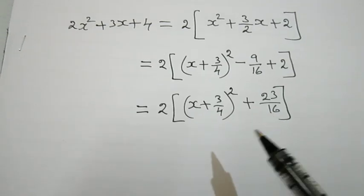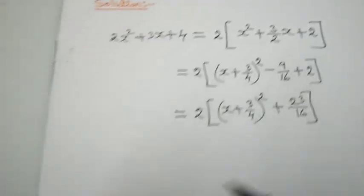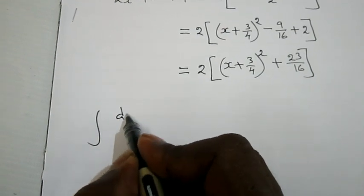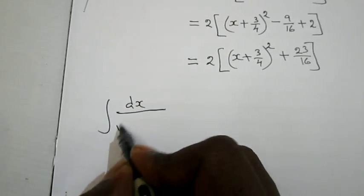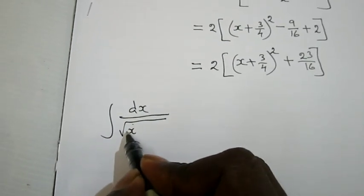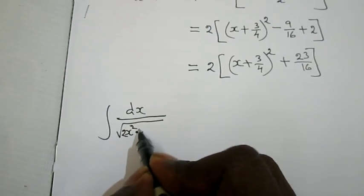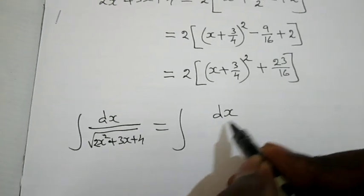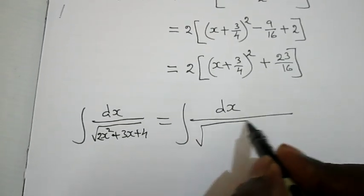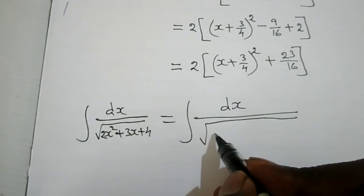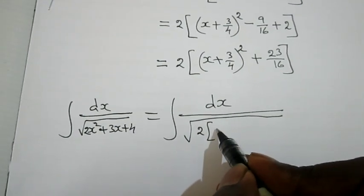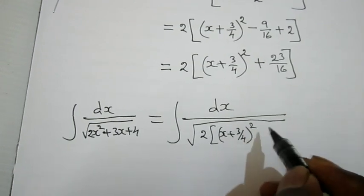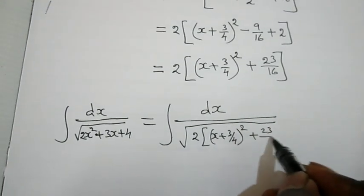Now I am going to substitute this into the given integral. The integral dx by root of 2x squared plus 3x plus 4 equals the integral dx by root of 2 into x plus 3 by 4, the whole square, plus 23 by 16.